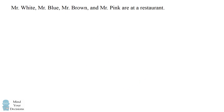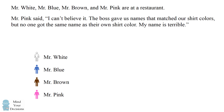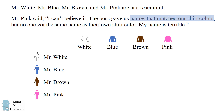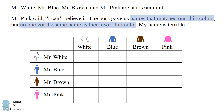Let's analyze the statements that we were given. We know that there are four different people who are at a restaurant. Mr. Pink explains that they were given names that match their shirt colors, so the shirts will be the same colors as their names. But no one got the same name as their own shirt color. In our logical grid, this means we can eliminate the entries along the diagonal.